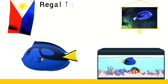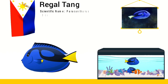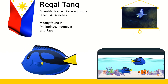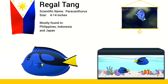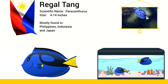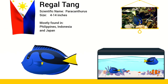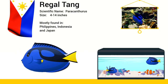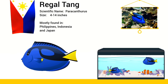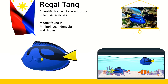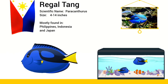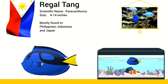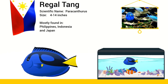The Regal Tang is a stunning fish made famous in the film Finding Nemo as the character Dory. The Regal Blue Tang can be found throughout the Indo-Pacific. It is seen in the reefs of the Philippines, Indonesia and Japan.